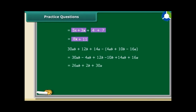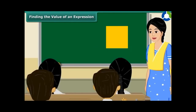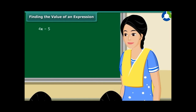On rearranging, we get 26ab plus 2b plus 30a. Consider a square with area equal to l squared. If l equals 4 cm, then the area is 16 cm squared. So, children, there are a number of situations in which we need to find the value of an expression. Consider the expression 4x minus 5. If x equals 4, then the expression equals 4 times 4 minus 5, which is 16 minus 5, that is 11. Similarly, if m equals minus 2, then the value of the expression m squared minus 2 will be equal to 2.